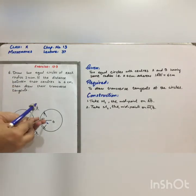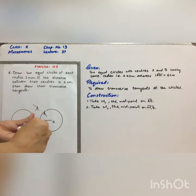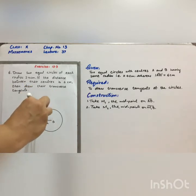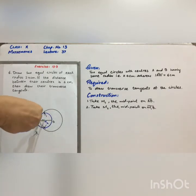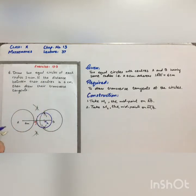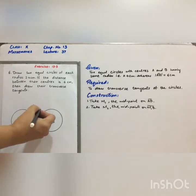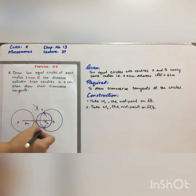With center M2 and radius M1 M2, draw a circle which will intersect the circle with center B at two points, you may say T and R.